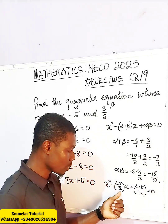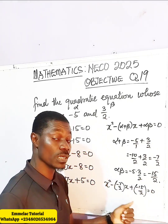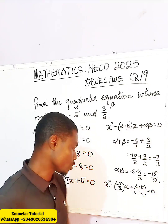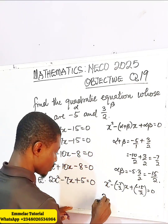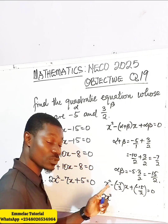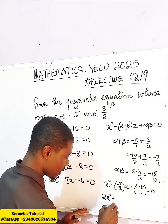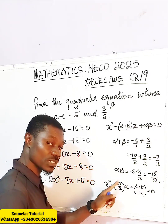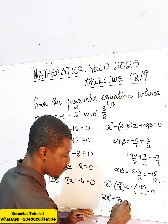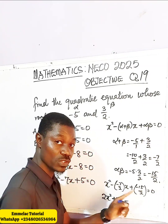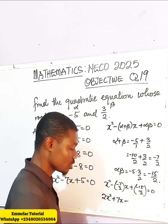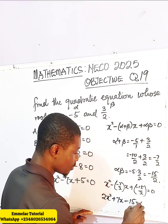To undo this fraction, let's multiply the whole equation by 2. By doing that, we have 2x squared. This minus and this minus give us plus — 2 times the fraction undoes the denominator, leaving us with 7x. Then plus times minus gives us minus, and 2 times 15 over 2 undoes the 2, leaving us with 15. So the equation equals 0.